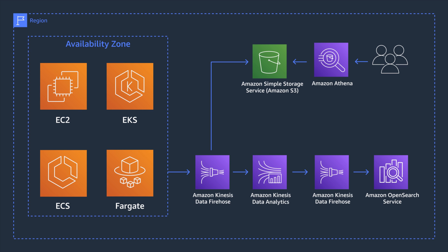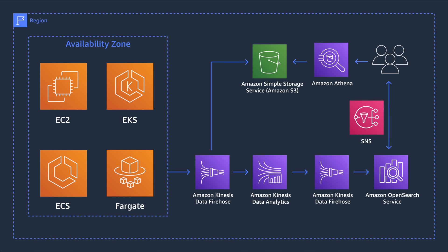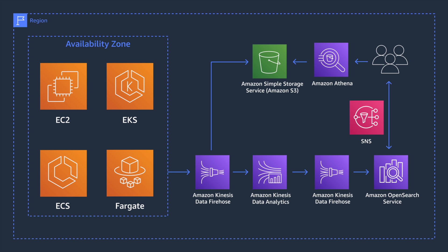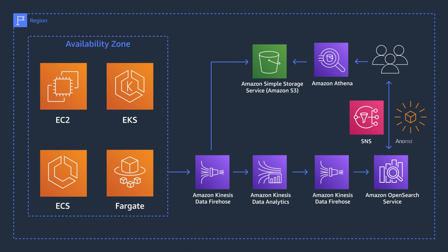Now back to OpenSearch — you can configure alerts with Amazon SNS when your application logs more than 5 HTTP 500 errors in a one-minute window. You can also create a detector for an individual anomaly detection task or multiple detectors that run simultaneously. OpenSearch will detect and alert you on anomalies it finds based on the aggregation method you choose.